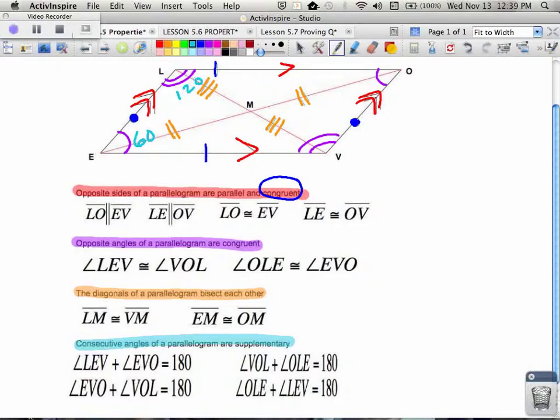And if ELO is 120, then LOV has to be 60. And if LOV is 60, then OVE has to be 120. You can see the relationships. That's because the opposite angles were congruent from before in the second purple statement. And since they're consecutive, we know that they're going to be 180 degrees, or in other words, supplementary. So lots of different properties in a parallelogram.